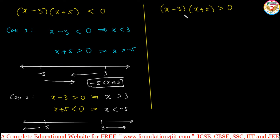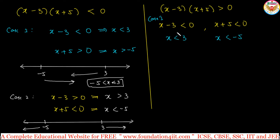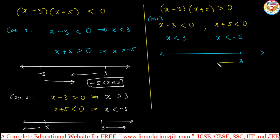Similarly, for the product greater than 0, both expressions should be the same sign. Taking both negative for case 1: x minus 3 less than 0 and x plus 5 less than 0. This gives x less than 3 and x less than minus 5. On the number line, x less than 3 covers the left of 3, and x less than minus 5 covers the left of minus 5. The common part is x less than minus 5.